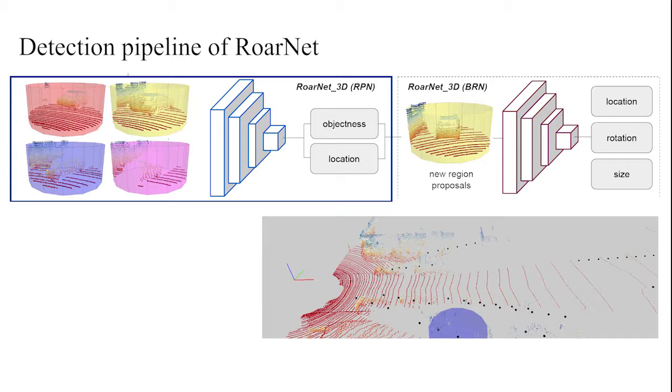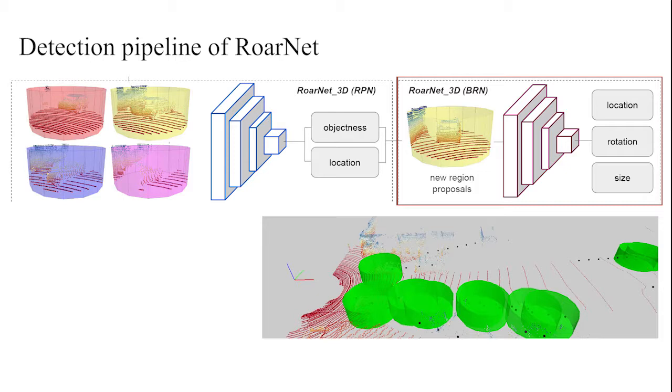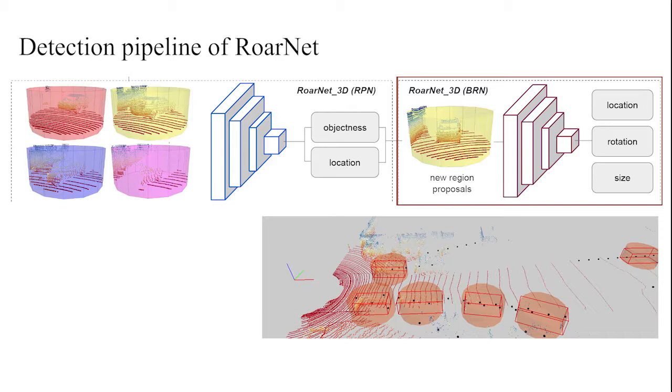Using predicted objectness scores, our model removes region proposals without a foreground object. At the final step, the model starts a new region proposal at the previously predicted location.